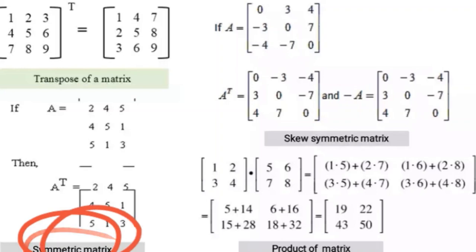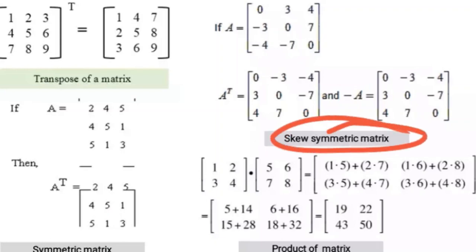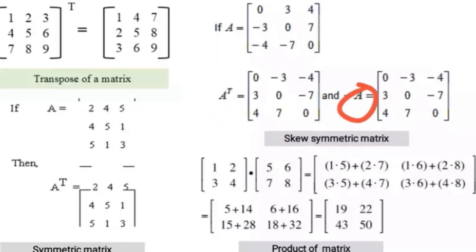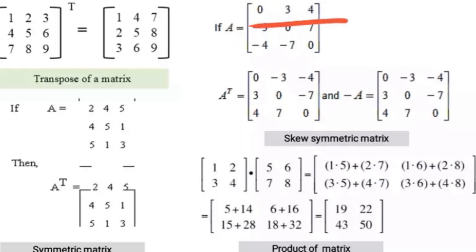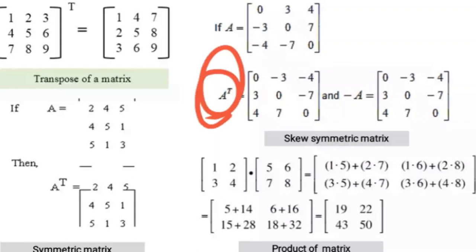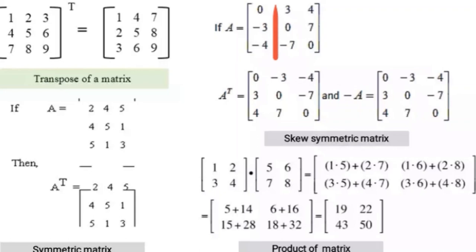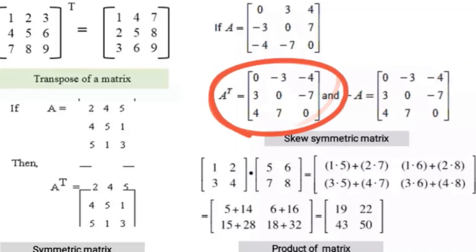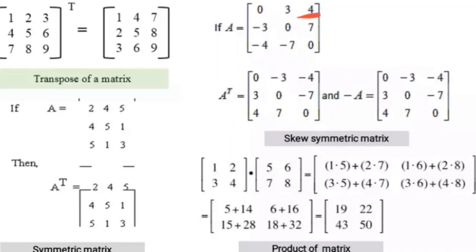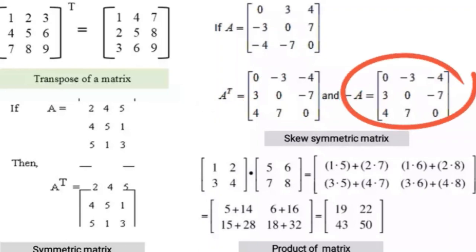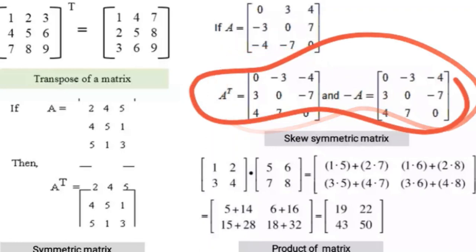For a skew symmetric matrix, when the transpose of any matrix equals the negative of the original matrix. Given matrix A with values 0, 3, 4 / 3, 0, 7 / -4, 9, 7 / 0 — when we compute the transpose and then compare it with the negative of A, the transpose equals the negative of the matrix. This kind of matrix is known as a skew symmetric matrix.